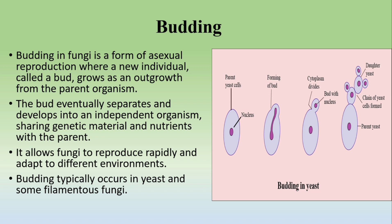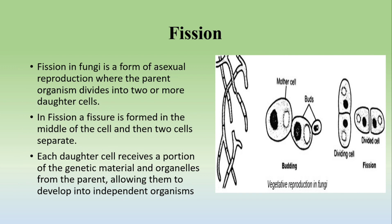In the final step, multiple buds are formed from the parent yeast cell, which are called daughter yeast cells. When a bud grows as an outgrowth from the parent organism, it eventually separates, sharing genetic material and nutrients. The daughter cells are exactly like the parent cells. Budding allows fungi to reproduce rapidly and adapt to different environments. It typically occurs in yeast and some filamentous fungi.